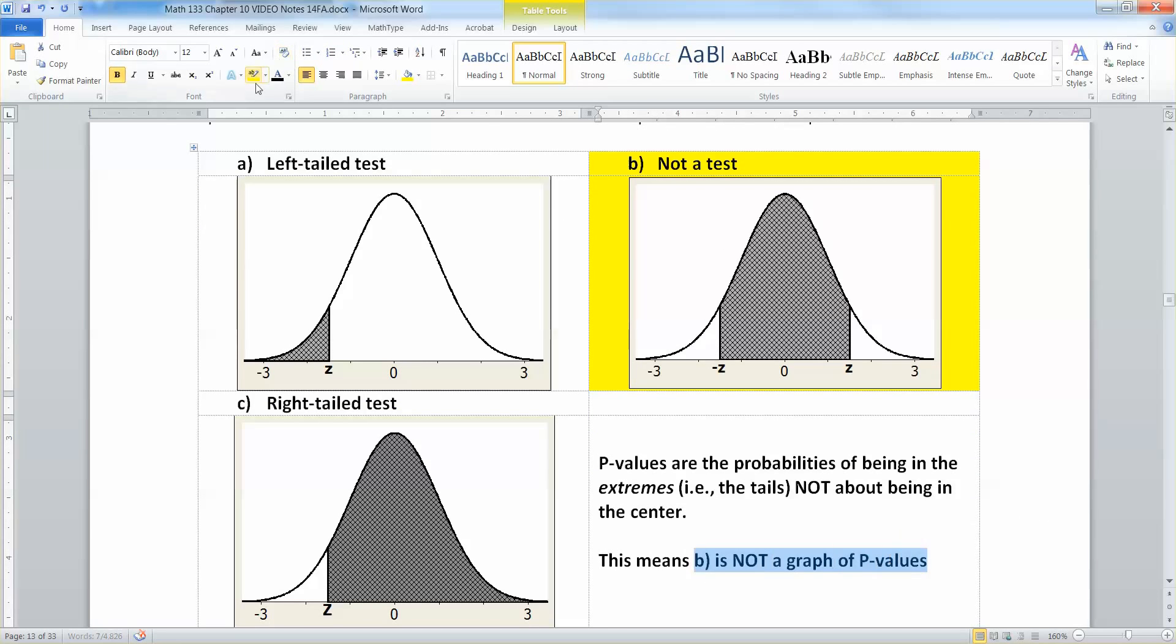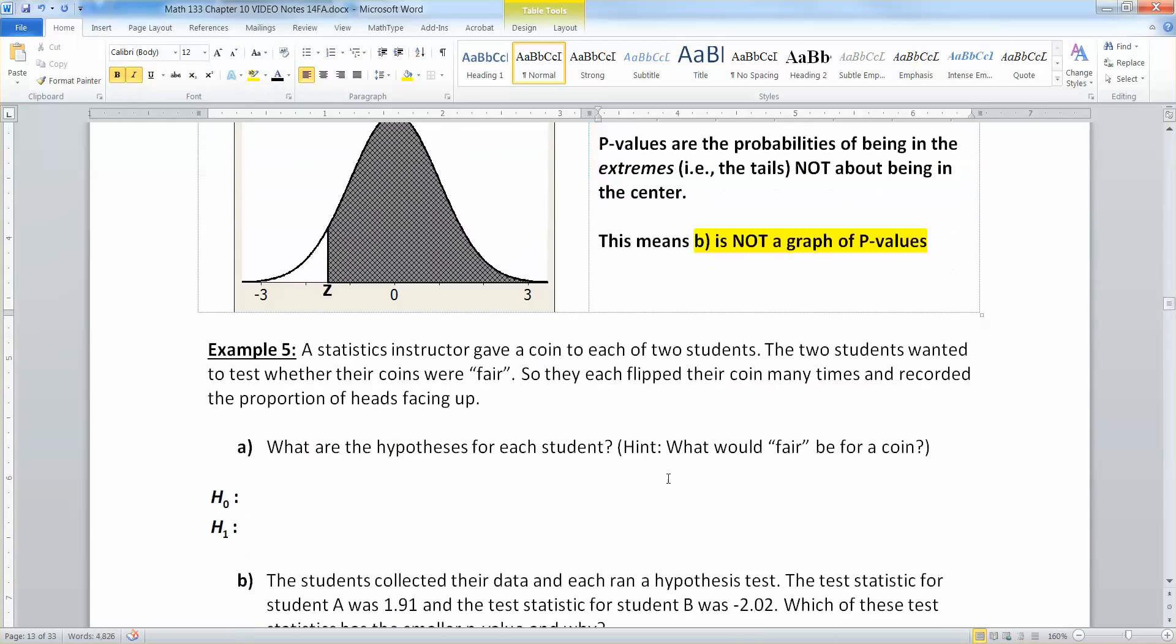All right, now let's think about this. A statistics instructor gave a fair coin to each of two students. The two students wanted to test whether their coins were fair, quote-unquote. So they each flipped their coin many times and recorded the proportion of heads facing up.